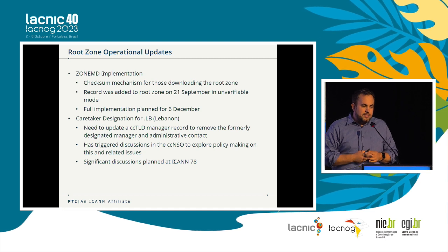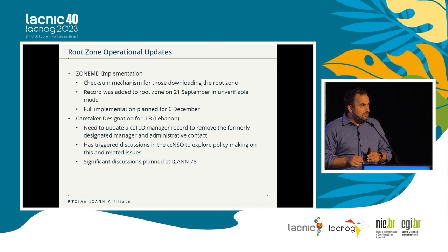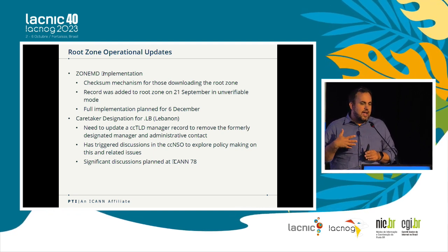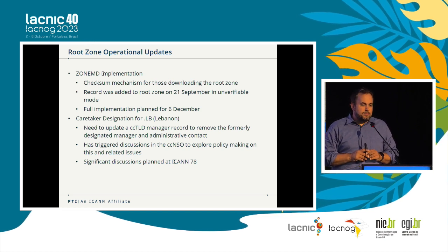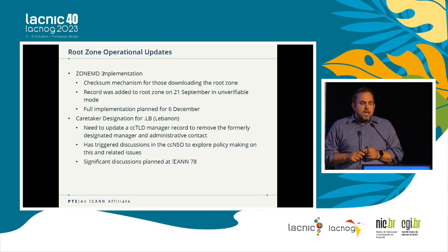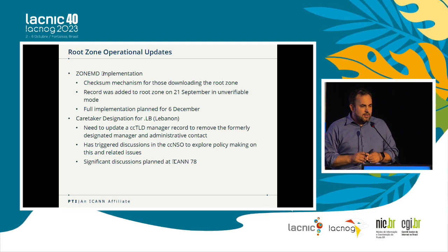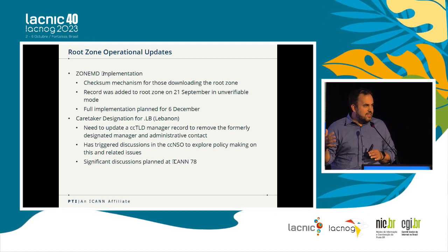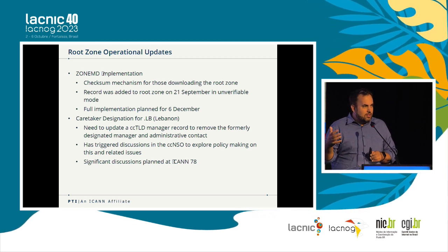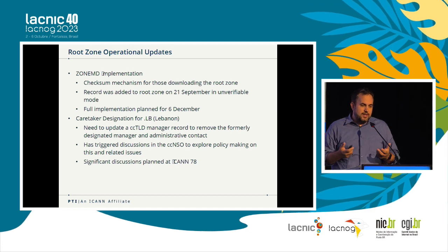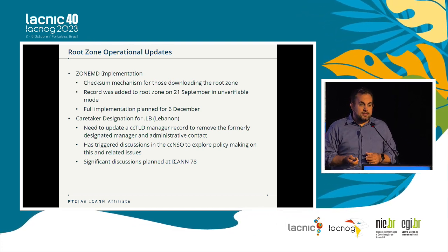Some other root zone operational updates: we're currently implementing ZoneMD, a new record type for the root zone that allows those running their own local root services to validate the root zone in a new way. We added a pilot record on the 21st of September, and we expect full implementation to be complete on the 6th of December. We also recently put the .LB domain — Lebanon — into a caretaker designation. This is the first time we've done this; it was necessary because of local events that meant we had to remove the previous operator from our records. This has triggered significant policy discussions within ICANN about how to codify this practice into formal policy.